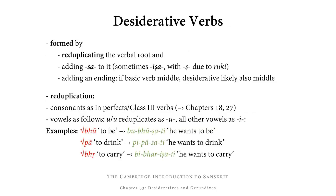These desiderative verbs are formed by reduplicating the verbal root and then adding sa to it. Sometimes it's not sa, but isha, where the s has changed to sh due to ruki after the e. And then to that we add an ending.